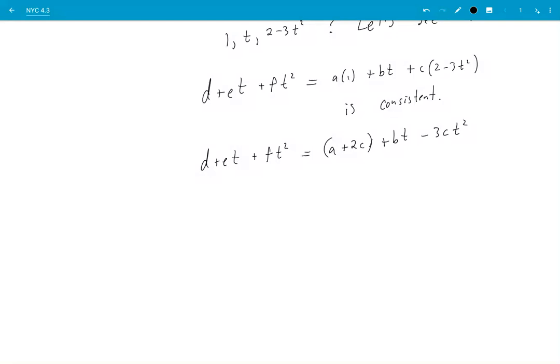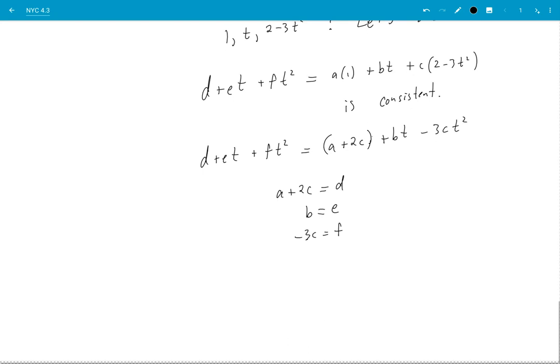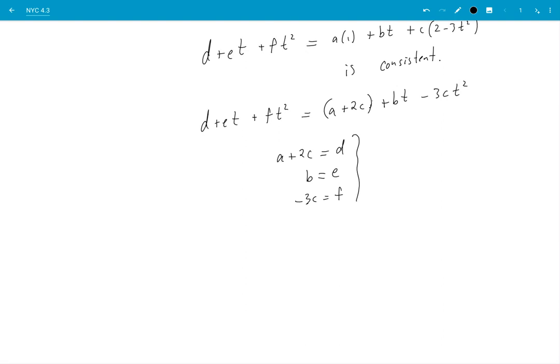So if this were to work I would need a+2c equal d, then b would have to equal e, -3c would have to equal f. So I need this to be consistent.